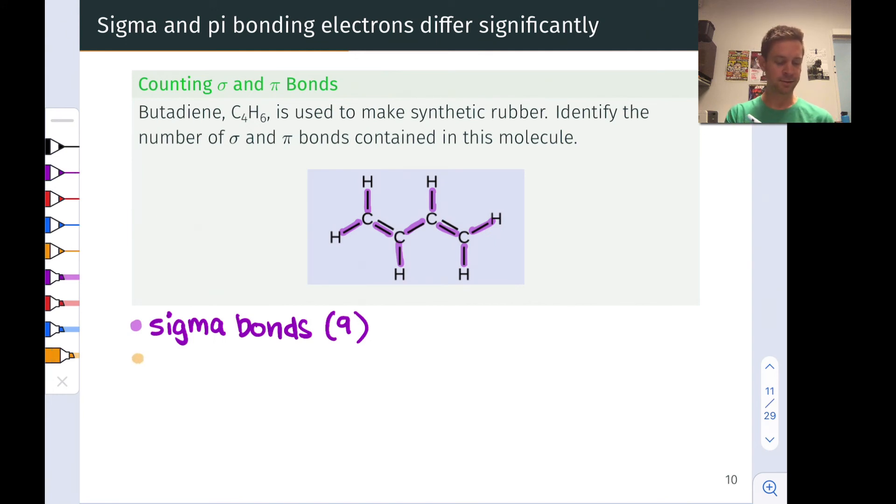And for the pi bonds, we're looking for double or triple bonds, keeping in mind that the second and third bonds of a double and triple bond are pi bonds. So here, for example, we have at this double bond, one pi bond, and at this double bond, another pi bond. So in butadiene, we've got two pi bonds total. It's that simple.